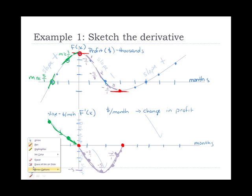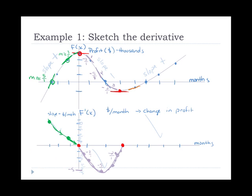To the right of the second red dot, we're back in positive slope territory. Looking at three points after x=3: all slopes are positive, so we'll be above the x-axis. The growth is more gradual than the green region — maybe 2/1, then 3/1, then 4/1. So the derivative graph heads upward gradually after x=3.